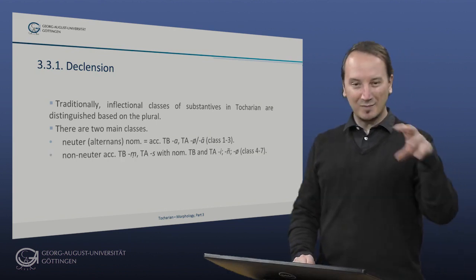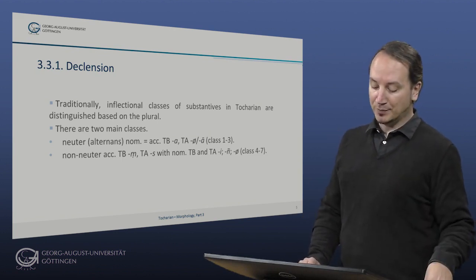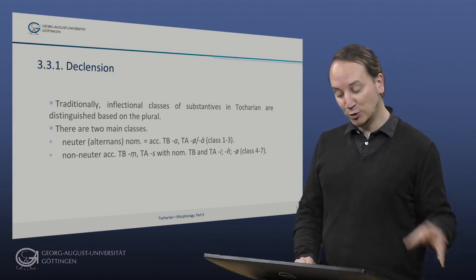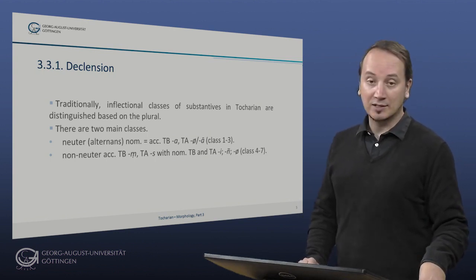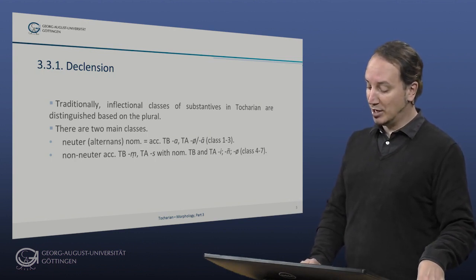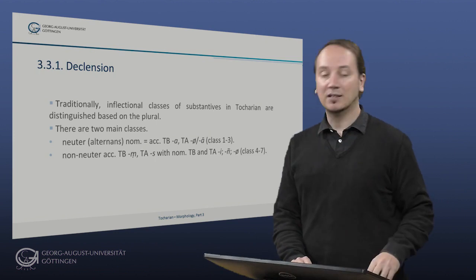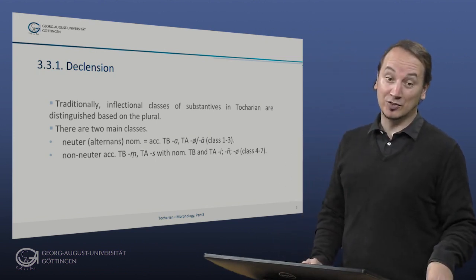And then the second major class are the non-neuter class, with an accusative usually in Tocharian B -ṃ and Tocharian A -s, with nominative Tocharian B -e and Tocharian A in -i, -aṃ, or zero. And these are classes four to seven.